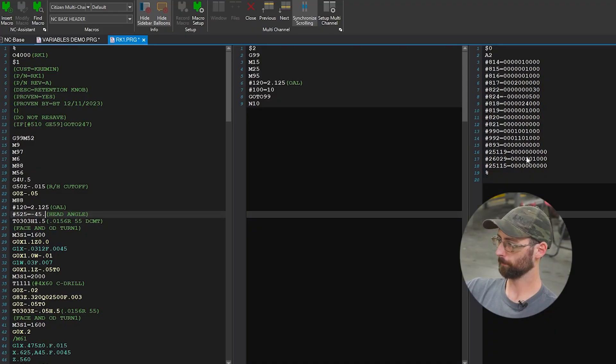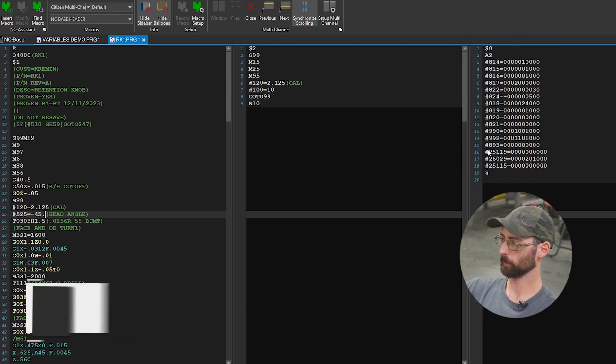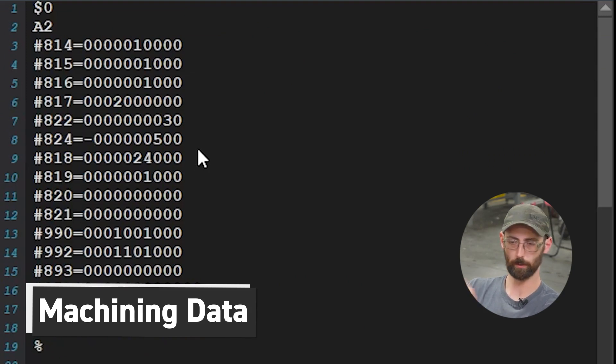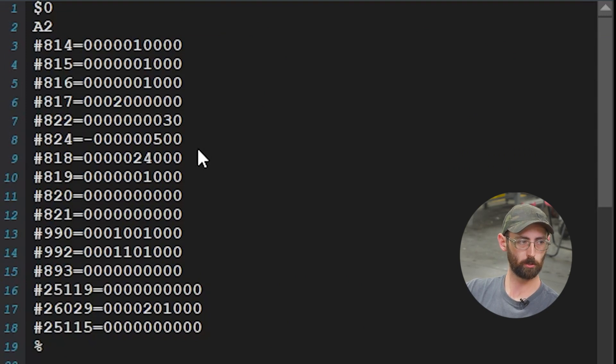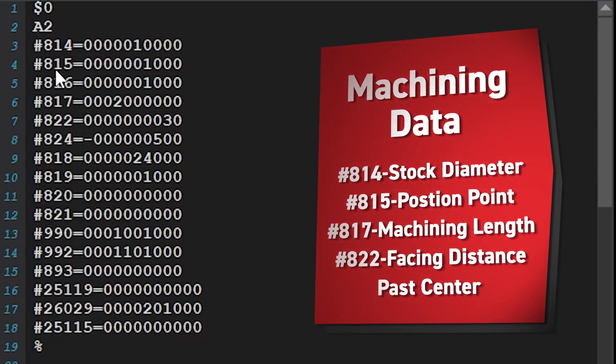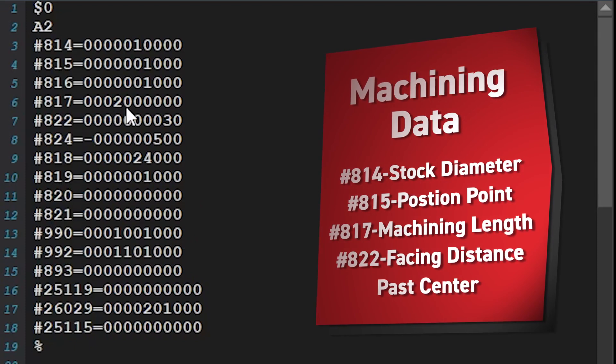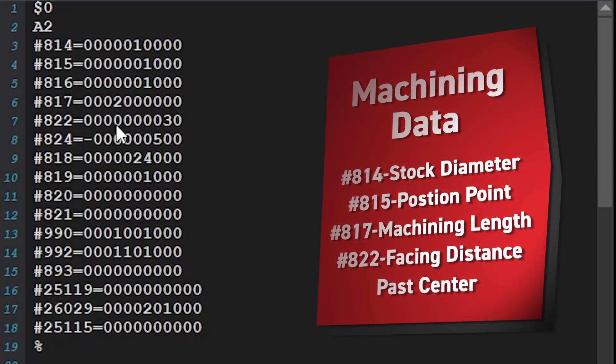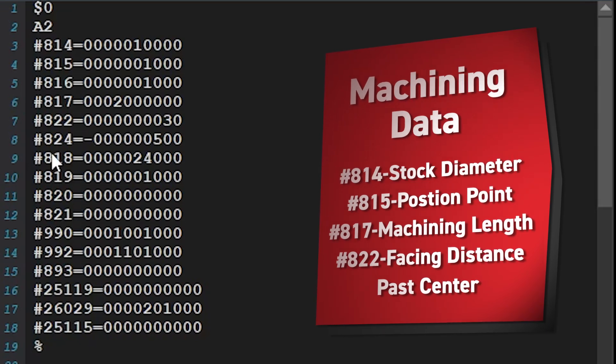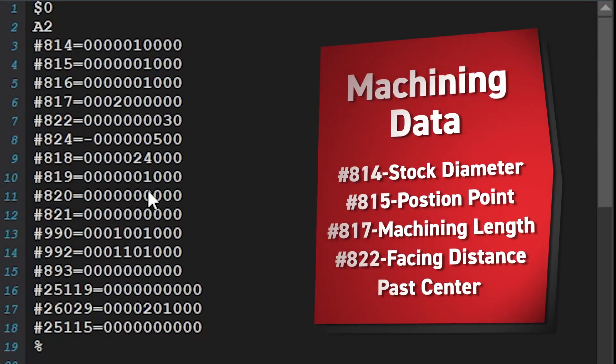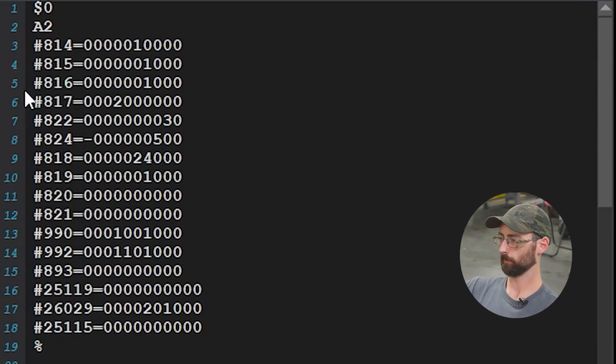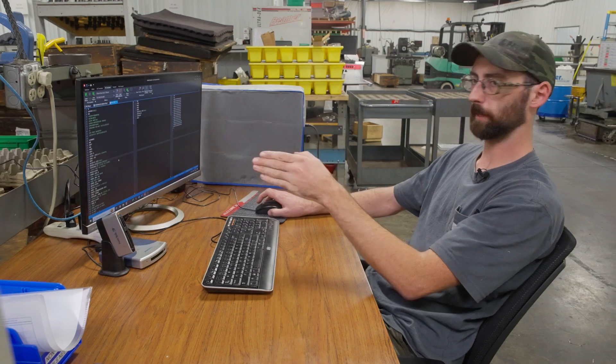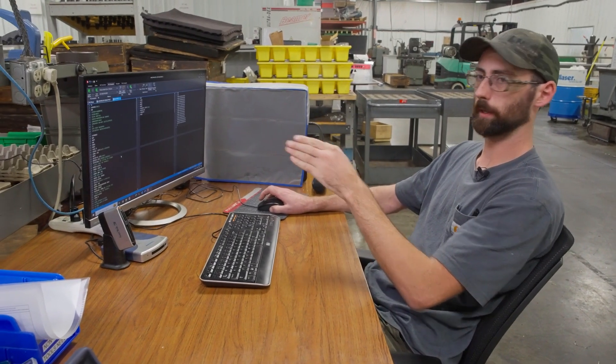This third column is your machining data. When you go to your MC data page on your machine, these are those values. #814 is your stock diameter, #815 is your positioning point, #817 is your machining length, #822 is your facing distance past center. What's interesting is you can use these predefined variables in your program, and that's where having flexible programs that are safe really comes into play.